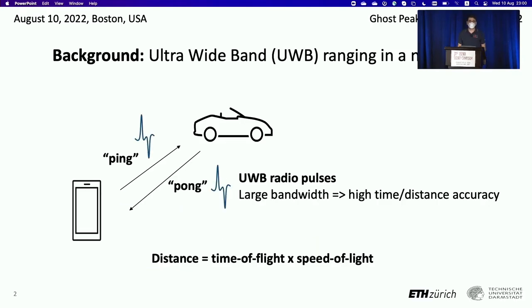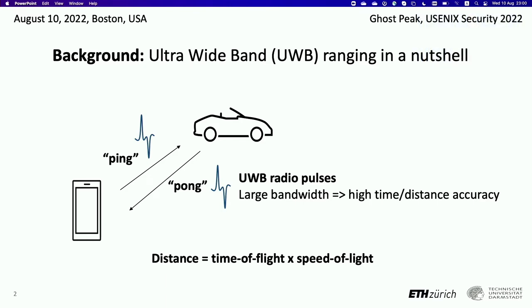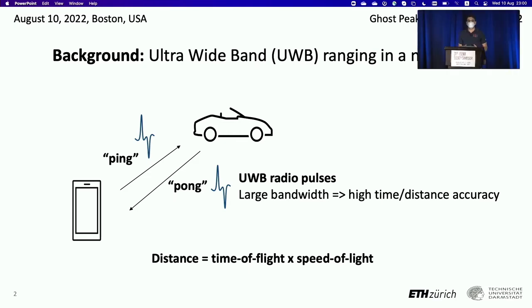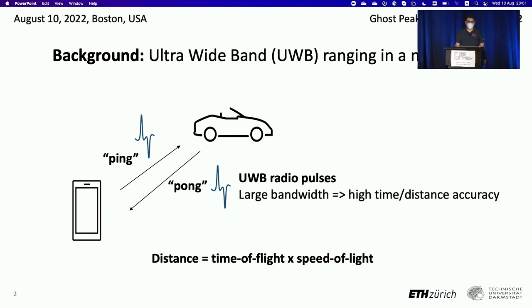What can we do with ultra-wideband? We have two devices, for example a phone and a car, and we want to measure the distance between the two. We can do that by looking at the time it takes for a radio packet to travel back and forth, and we know that the packet travels at the speed of light. Because we use ultra-wideband — very short pulses — we can achieve very high accuracy in time and therefore in distance.